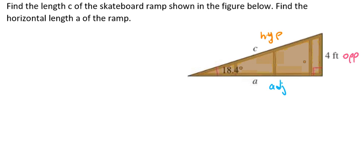So we're looking for C first. We have opposite and hypotenuse, which is going to be sine. So we're going to find the sine of 18.4. We're going to have that set up as the opposite over our hypotenuse, which is C.